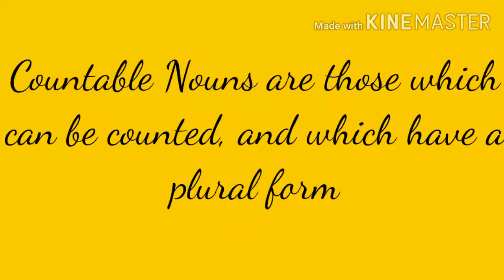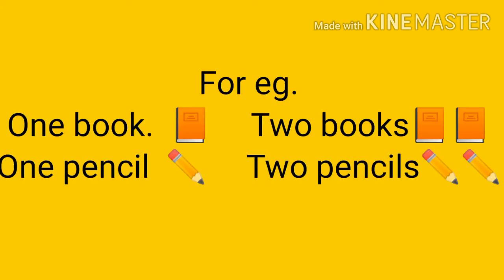So what is a countable noun? Children, countable nouns are those which can be counted and which have a plural form — nouns which we can count on our numbers. For example, one book, two books, one pencil, two pencils. So these are countable nouns.